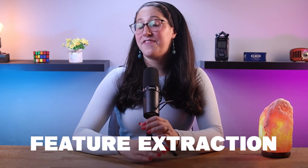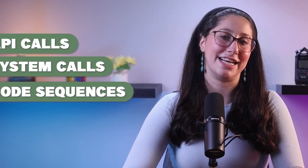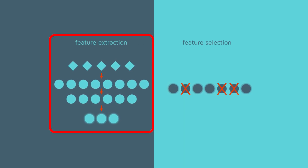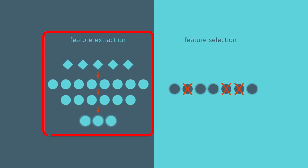Next up we have feature extraction. Machine learning models can extract features from the malware code or behavior, such as API calls, system calls, and code sequences. These features are then used as input data for the models to classify whether the code is malicious or harmless. Feature extraction helps in identifying common characteristics of polymorphic malware across its different variants.